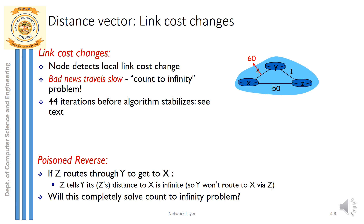What will node y think now? At t=1, the distance vector calculated for y is 60. This 60 is compared with node z's distance, which is 5. Since 5 is less than 60, node y will think it has a path via z to reach destination x with a cost of 5. But is that true? Definitely no — the cost from y to x has already increased from 4 to 60, so that wrong information is now circulated.